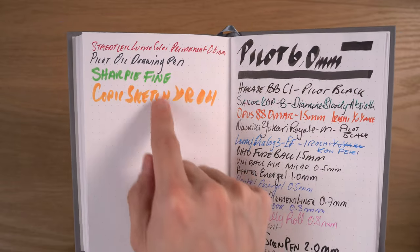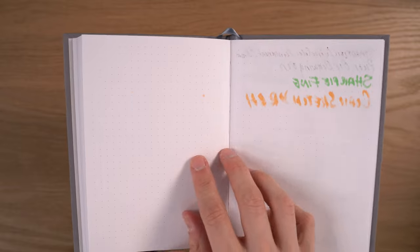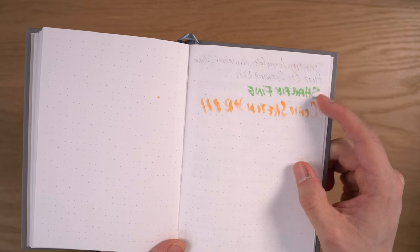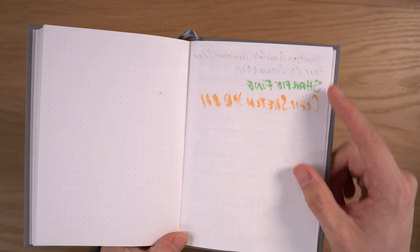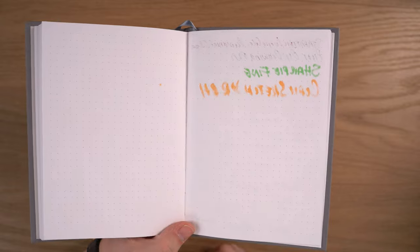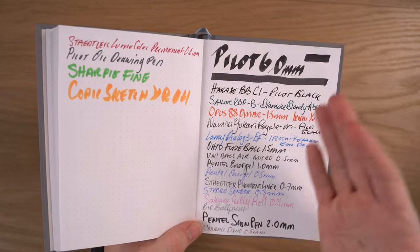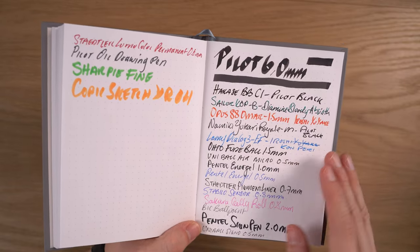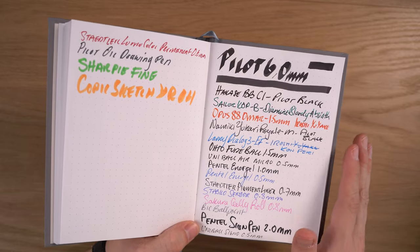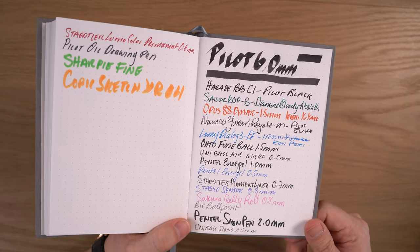None of the fountain pens were a problem. The six millimeter Pilot, my Hakase with the double broad cursive italic, Kinga pen broad, Opus 88 with a 1.5 millimeter stub, no issue. When we go to the more troublemaker pens, we do get some bleed through for sure from the Staedtler permanent marker, the Sharpie, the Pilot oil drawing pen a little bit. The Copic sketch a bit also even made it onto the other page there. I think the performance of this is really excellent, especially for how thin this paper is.